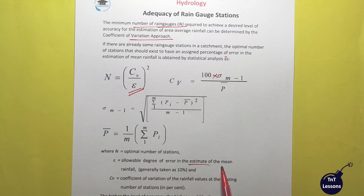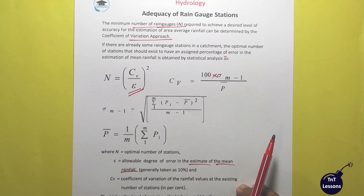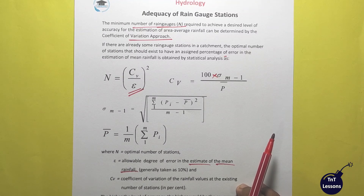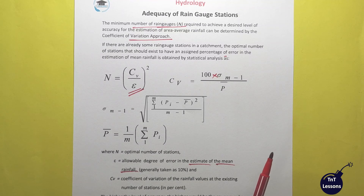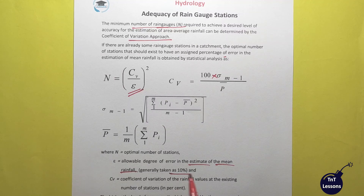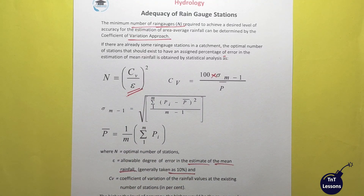The allowable degree of error in the estimate of mean rainfall — when we collect data, we can allow some error. Normally, we can accept a 10% error. So when we set up the question, we can give a 10% error. That's the reason we say 10%.